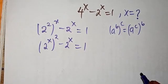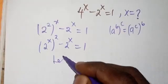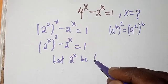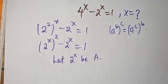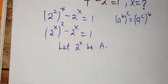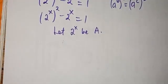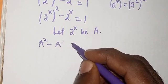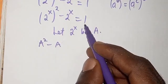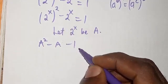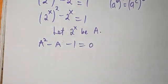Are you following? The next thing we are going to do is let 2 to the power x be a. If 2 to the power x is a, we are going to have a squared minus a, and transposing 1 to the left-hand side, we get a squared minus a minus 1 equals 0.